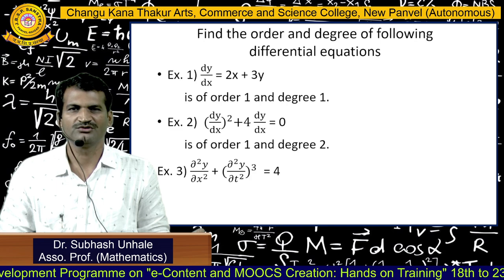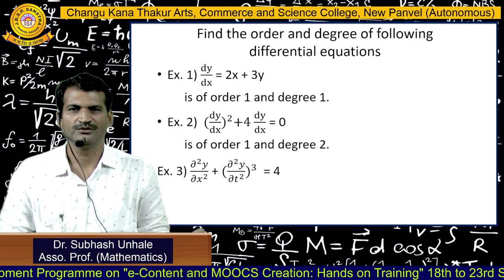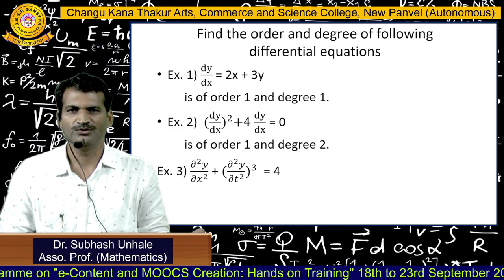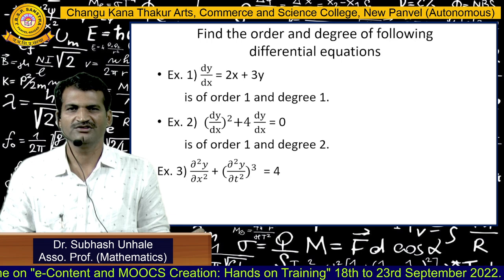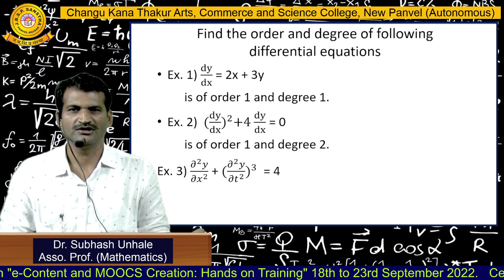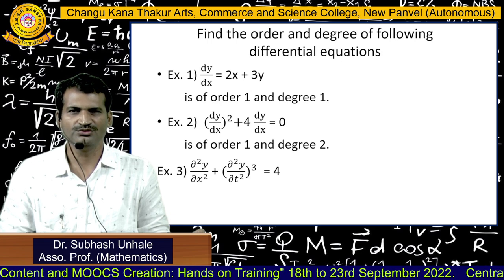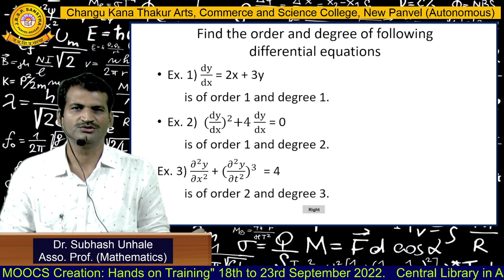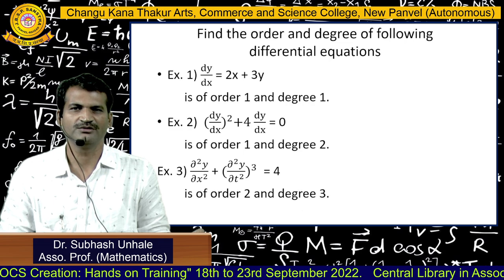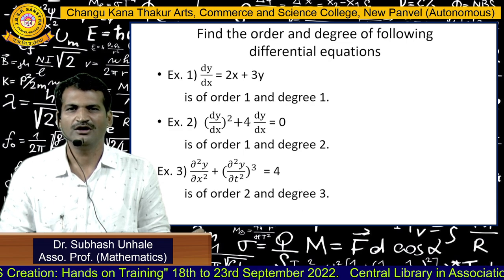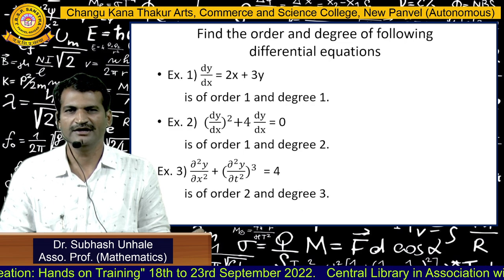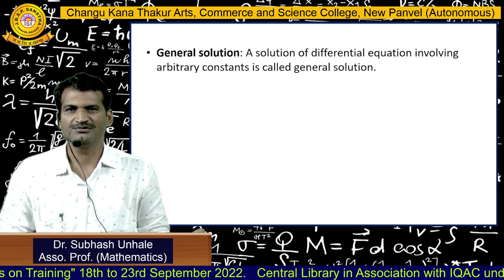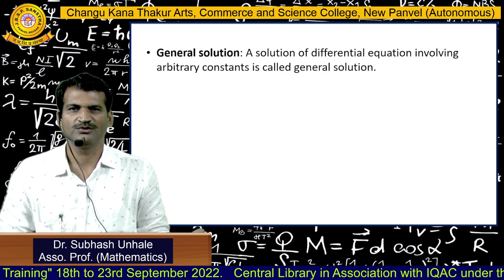For the example ∂²y/∂x² + (∂²y/∂t²)³ = 4: the highest-order derivative is 2 and the power of the highest-order derivative is 3, so this is a differential equation of order 2 and degree 3.